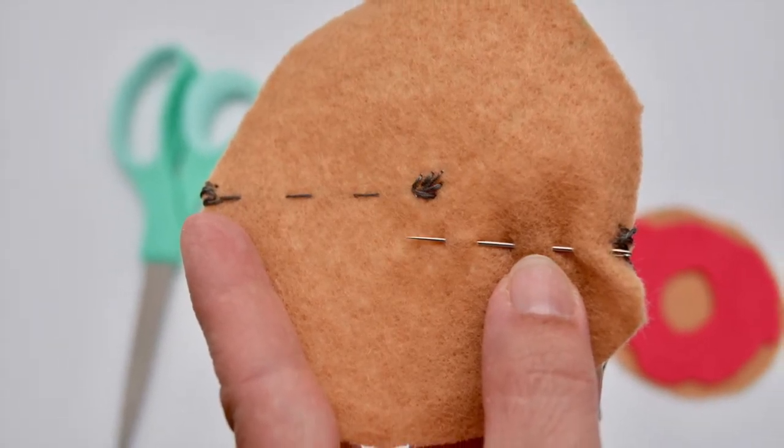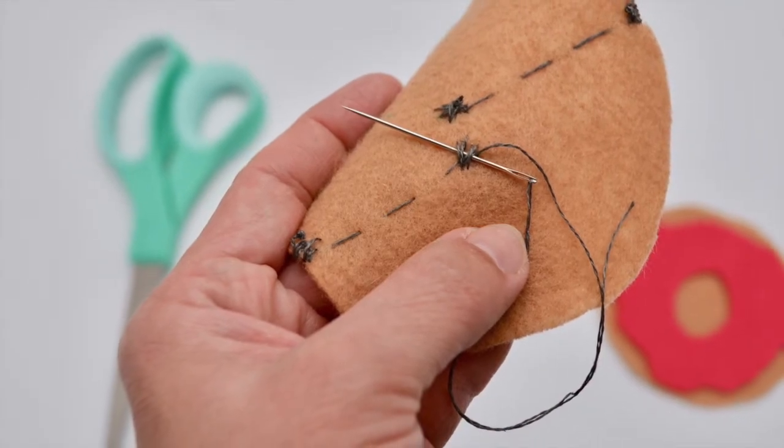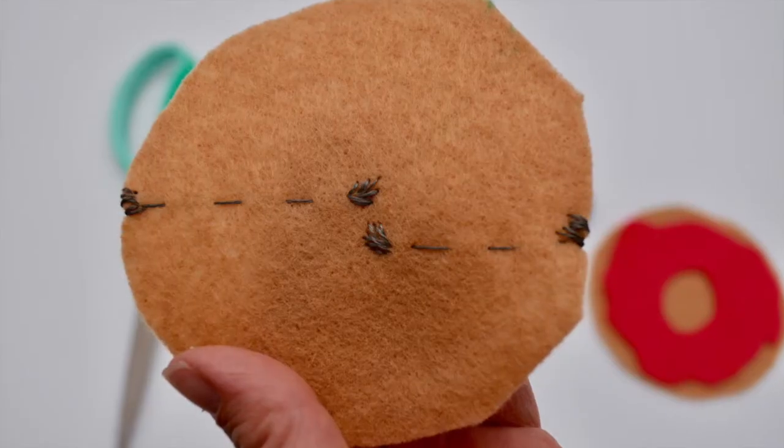And then you just do the same thing on the other side. Sew five or six stitches on the edge, do a running stitch to the center, and sew another conductive pad.